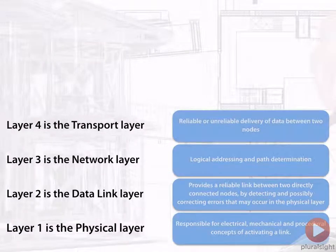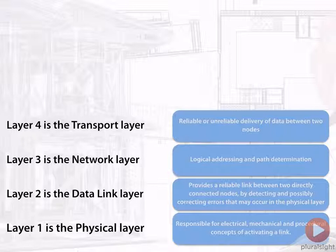Layer four is what we call the transport layer. The transport layer is responsible for providing either a reliable delivery service or an unreliable delivery service to the layers above. And it does this by communicating between two nodes across the link that is established at layer two and layer one, and it uses layer three for the addressing to find the host on the other side.